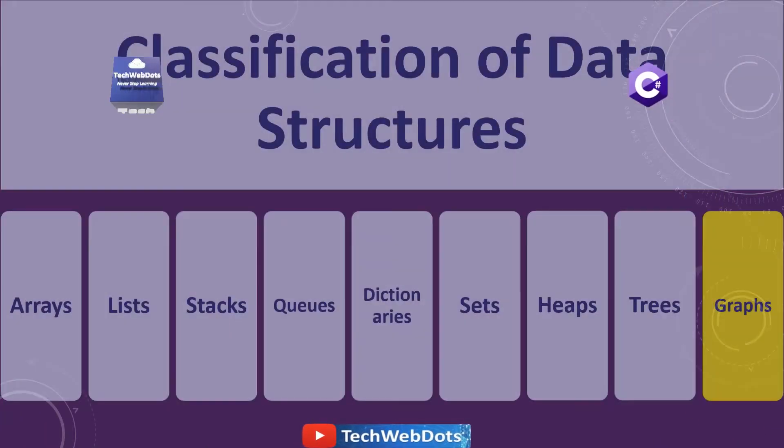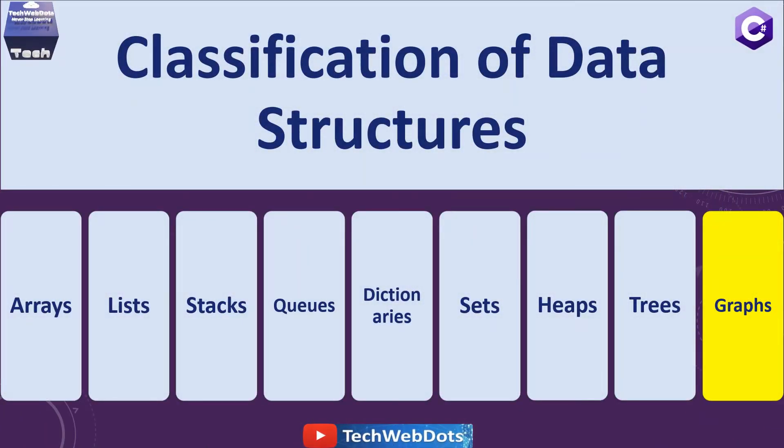Let's move next. If I talk about the classification of data structure in C# especially, we have arrays, list, stack, queues, dictionaries, sets, heap, trees and graphs. As you can see the highlighted one, I am going to talk about graph only. Tree and graph are the two spatial data structures that come under non-linear data structure.